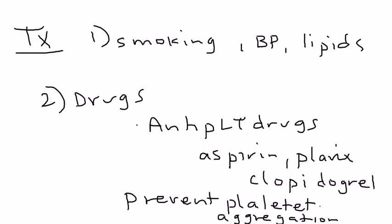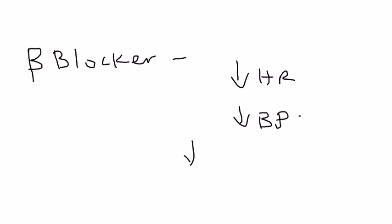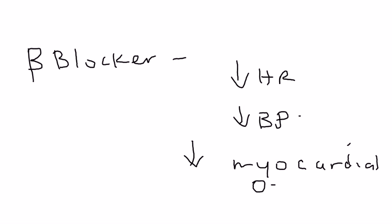The next type of drug is a beta blocker. A beta blocker is important because it can reduce heart rate and blood pressure. By doing that, it reduces the myocardial oxygen demand, which can decrease ischemia.